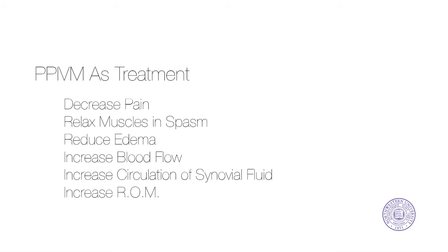Mobilization of the spine to change tissues is indicated to decrease pain, relax muscles that are in spasm, reduce edema, increase blood flow and circulation of synovial fluid, and increase range of motion. A painful or hypomobile joint indicates a need for PIVM in the area of restriction.